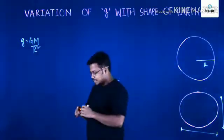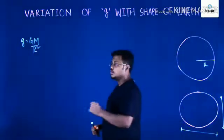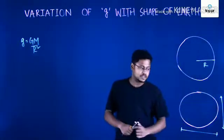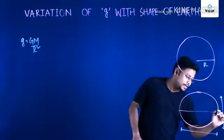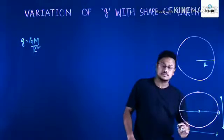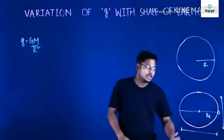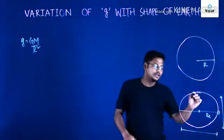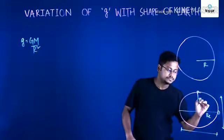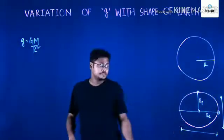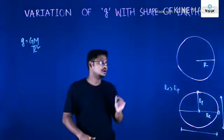So the distance of a body lying on the surface of the earth is not always equal at different points on the earth's surface. In the equatorial plane, the distance from the center of the earth is R_e, which is much greater than R_p, the distance when the body is at the polar region. So R_e is quite higher than R_p because the earth is not spherical in shape.